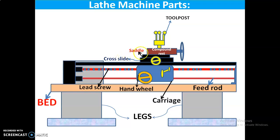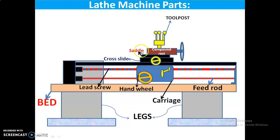Saddle is an H-shaped casting mounted on the top of the lathe bed. It provides support to the cross slide, compound rest, and tool post.